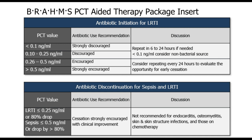The FDA algorithm for initiation: if a COPD exacerbation PCT comes in at 0.25 or less, therapy is discouraged; your body can fight the infection. If PCT is 0.25 to 0.5, therapy is encouraged, and strongly encouraged around 0.5. For antibiotic discontinuation: lower respiratory tract infections, an absolute value of 0.25 or an 80% drop; sepsis, 0.5 or an 80% drop. The FDA wording is: cessation is strongly encouraged with clinical improvement. You cannot stop early in all situations — not in endocarditis, osteomyelitis, skin and structure infections, patients on chemotherapy, or MRSA bacteremia.